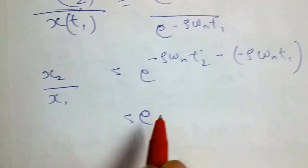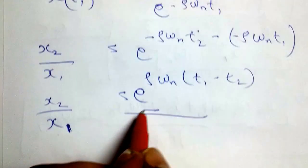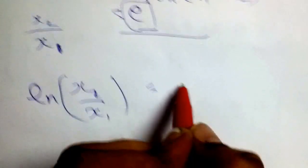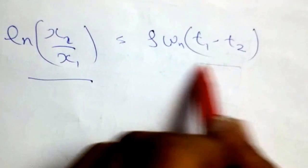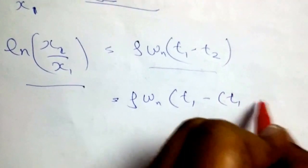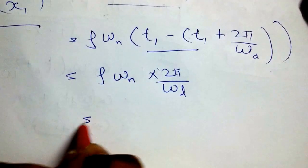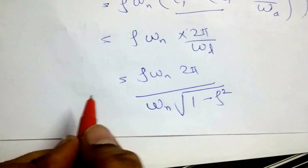This equals e^(ζω_n(t1 − t2)). To eliminate the exponential, we take the natural logarithm on both sides: ln(x2/x1) = ζω_n(t1 − t2). Substituting t2 = t1 + 2π/ω_d, t1 cancels and we are left with −ζω_n × (2π/ω_d) = −ζω_n × 2π / (ω_n√(1−ζ²)), since ω_d = ω_n√(1−ζ²).